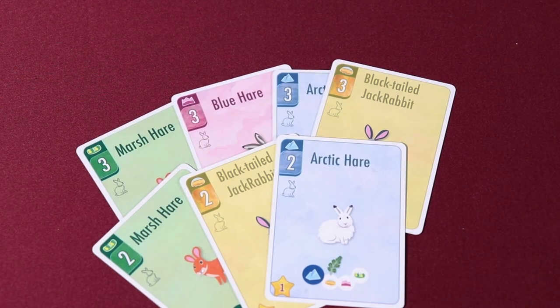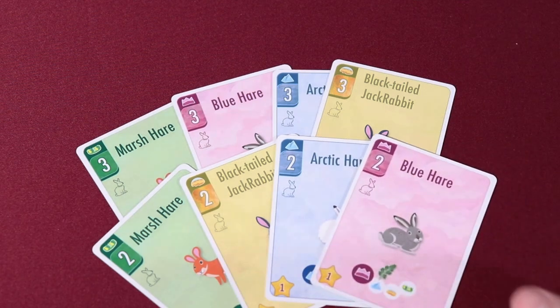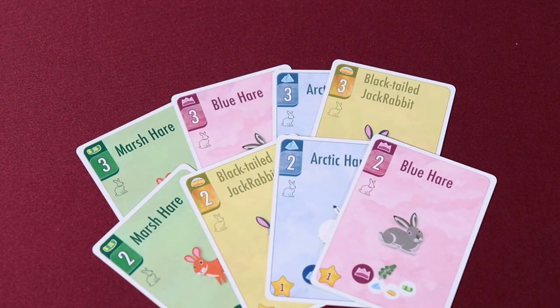The number 2 and 3 rabbits in each suit have a special ability. However, this ability is only active if the played rabbit matches the current round's terrain. This special ability allows the rabbits to take a Kale left on the table, even if the Kale doesn't match the round's terrain.